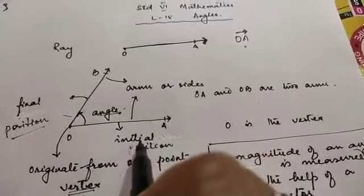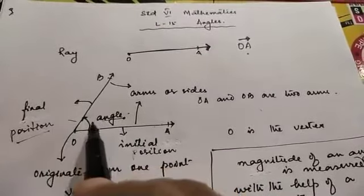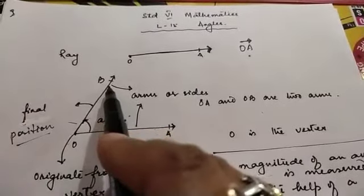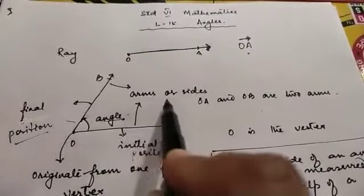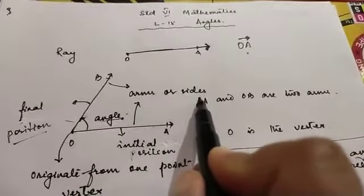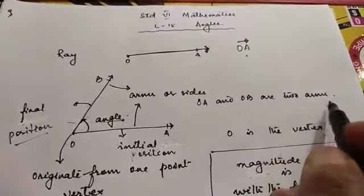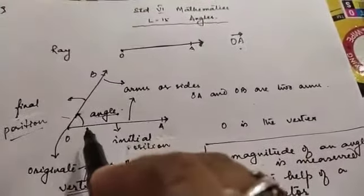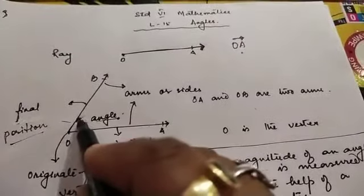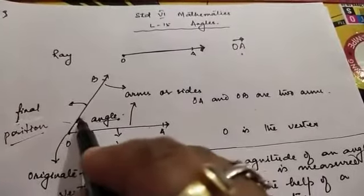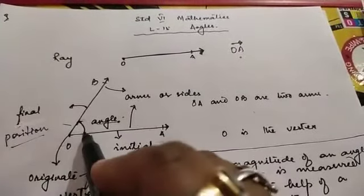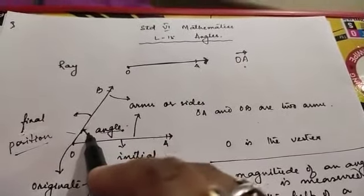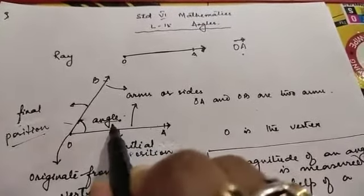This is the initial position of the ray and this is the final position of the ray. The initial position is one ray and the final position is the other ray. These are known as the arms or sides of the angle. OA and OB are the two arms and O is the vertex. When we see that there is a gap between these two rays, this measure formed between the two rays is the angle.